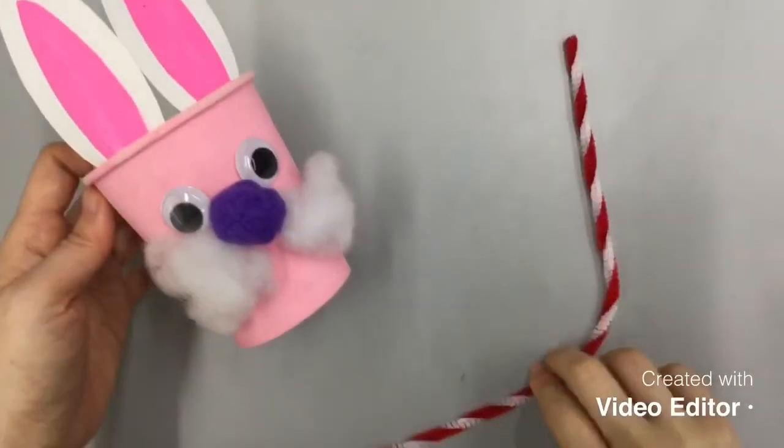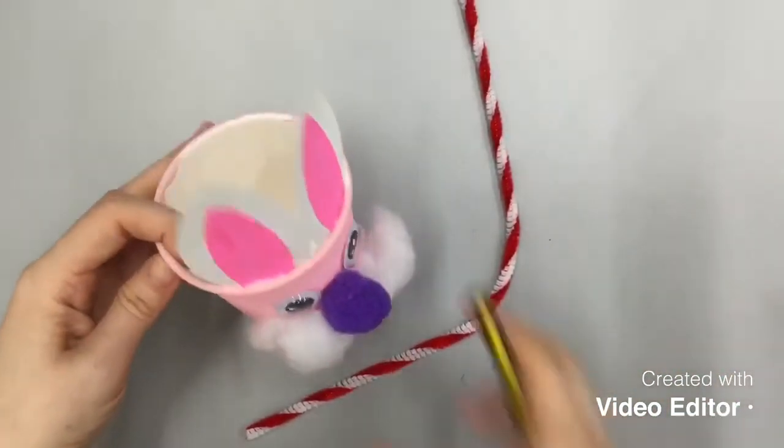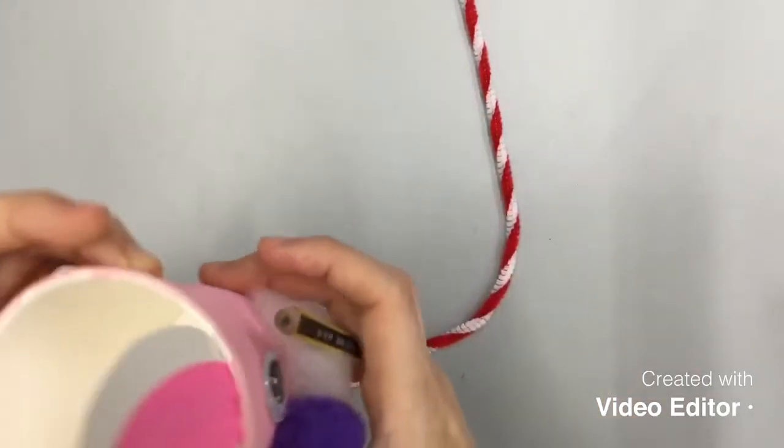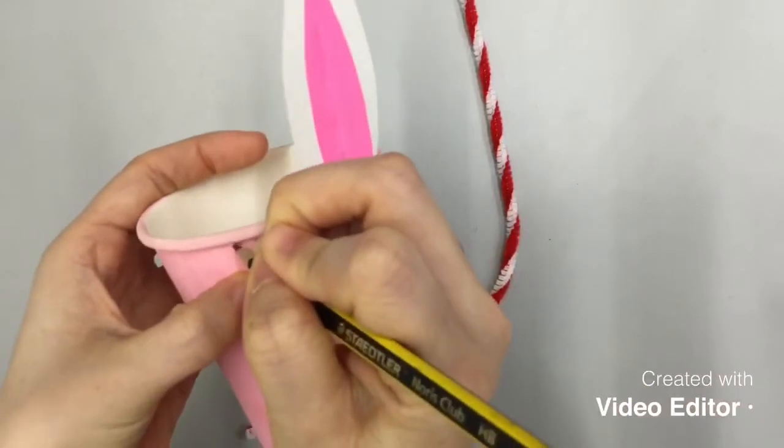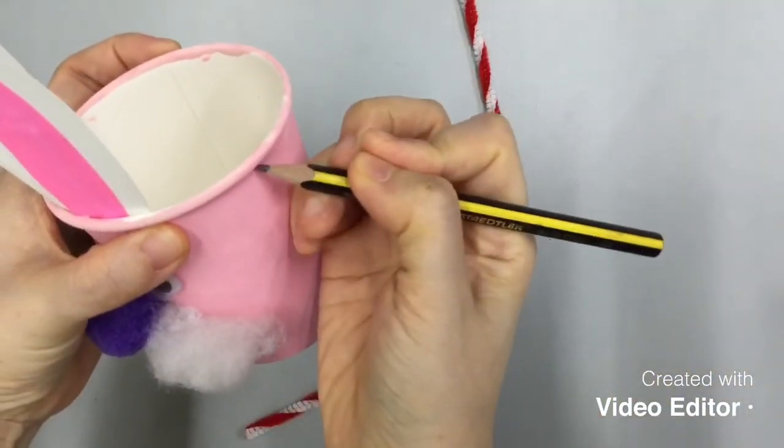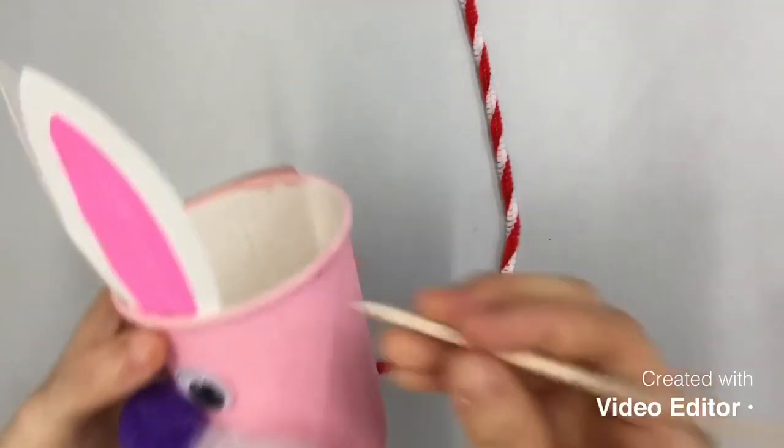For the last step, we'll be creating handle with this pipe cleaner. Please find the help from grown-up for punching the hole because it can be dangerous. It's always better to mark where I'll be making a hole with a pencil. Once again, boys and girls, leave this part to the grown-up.